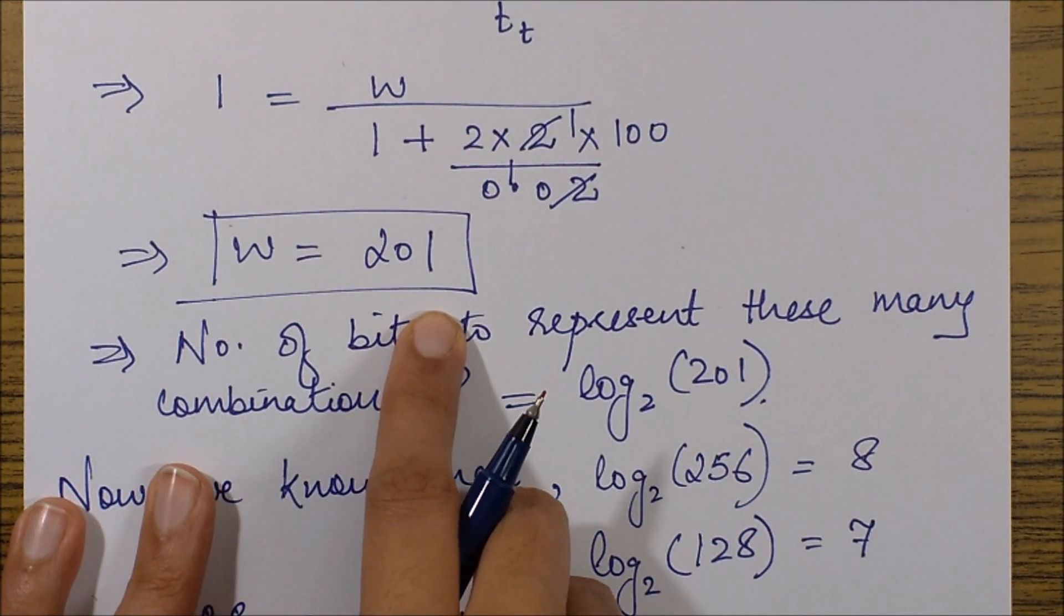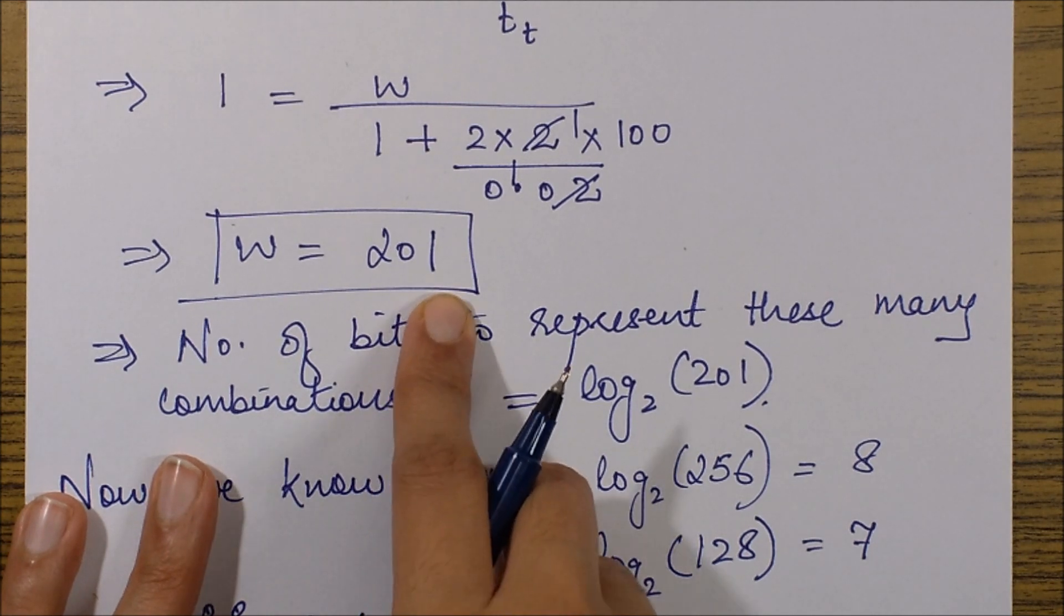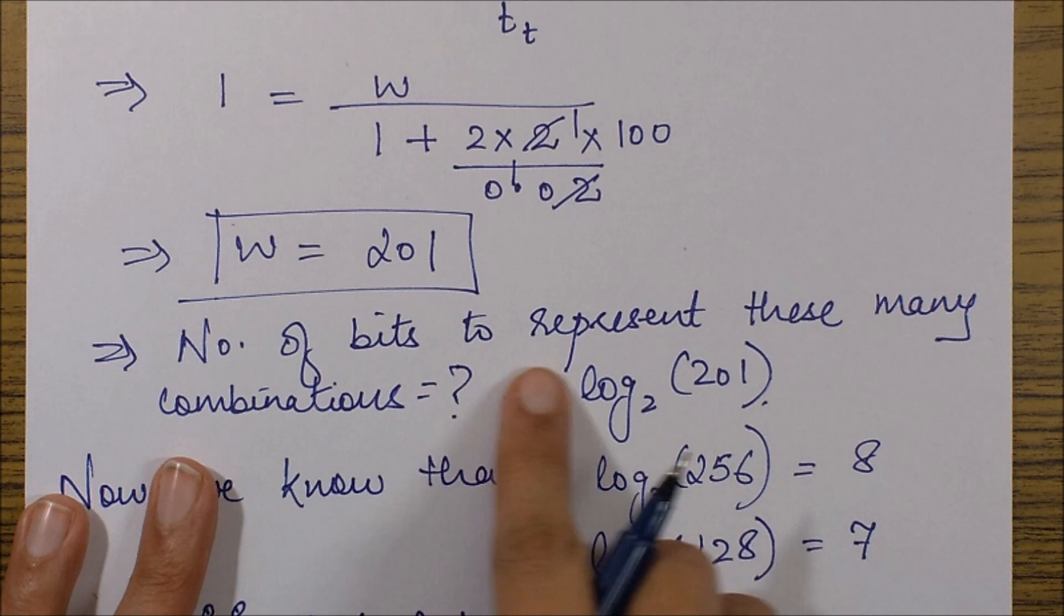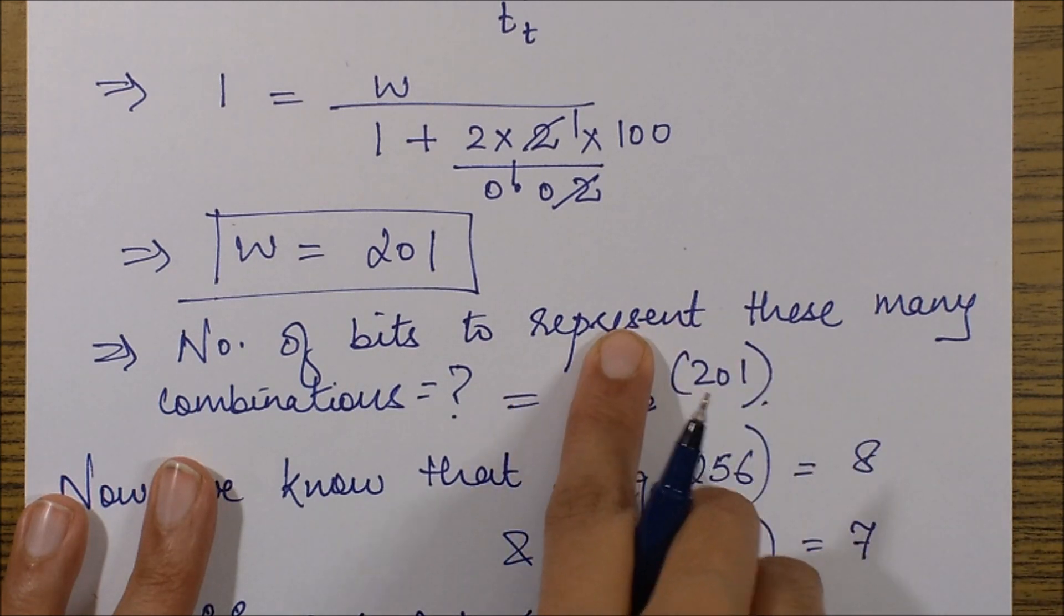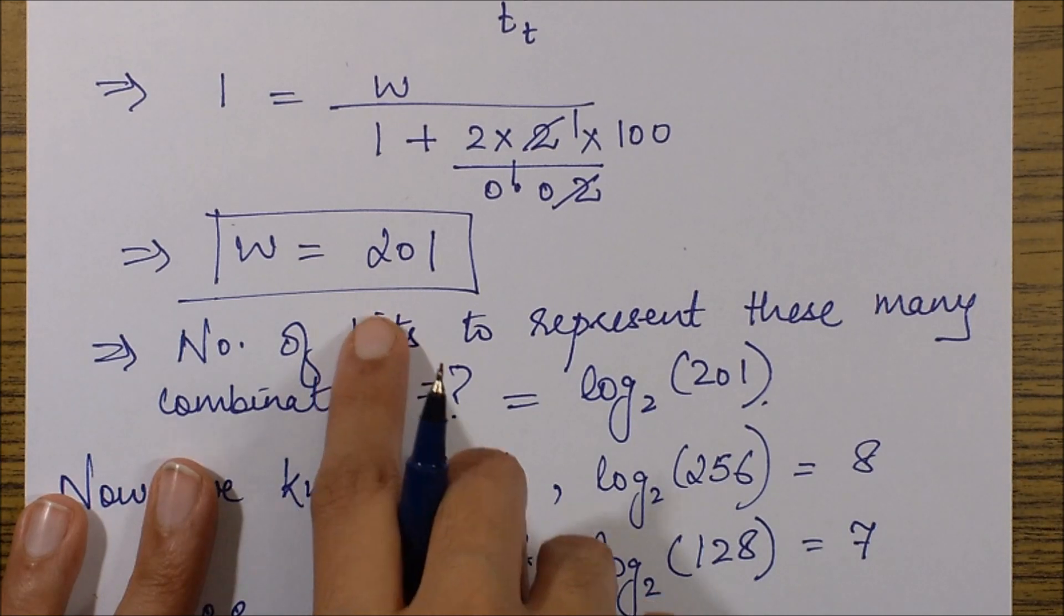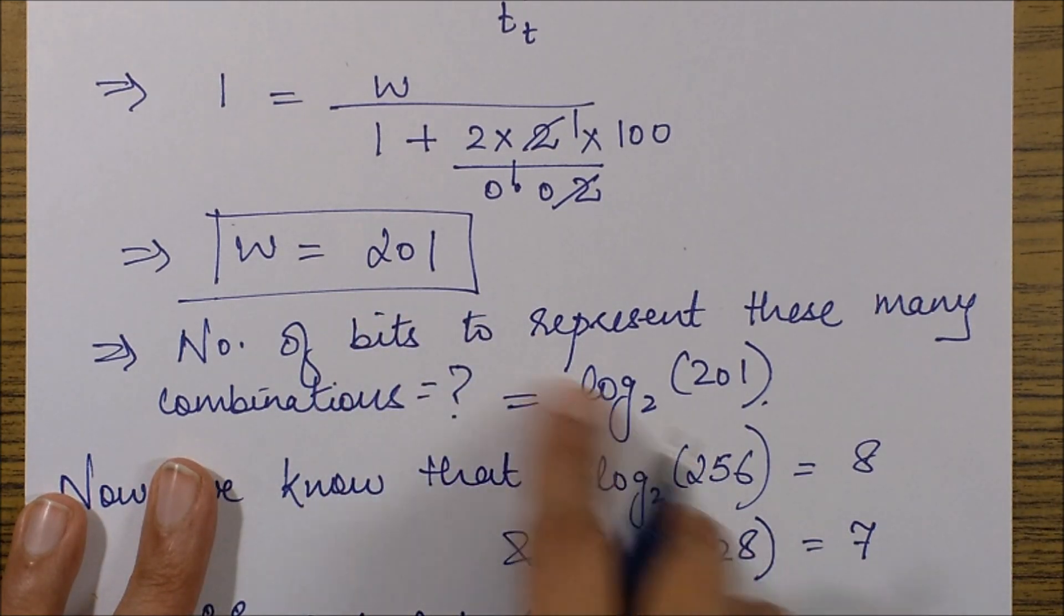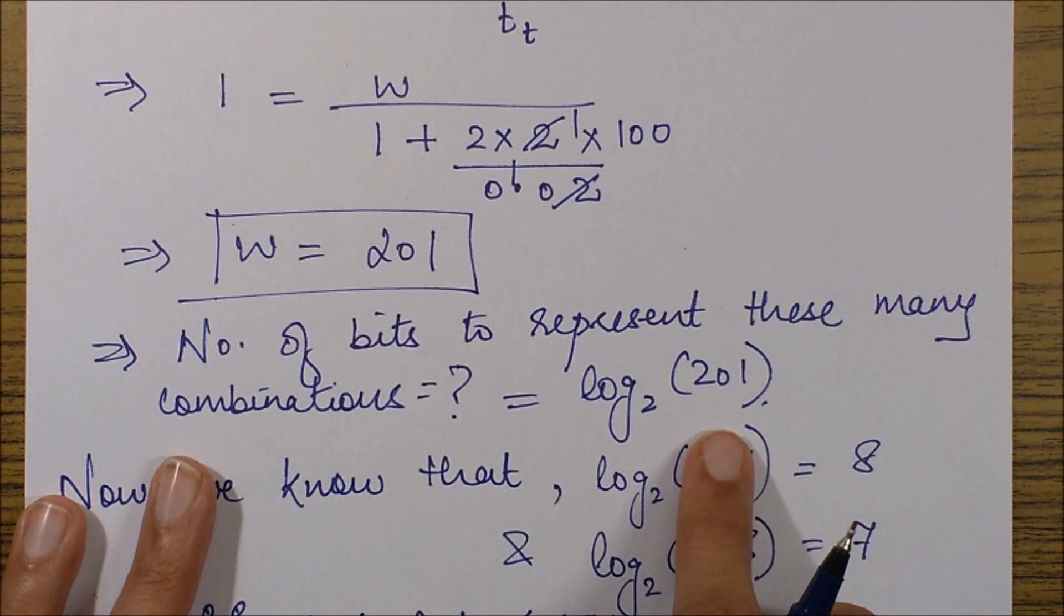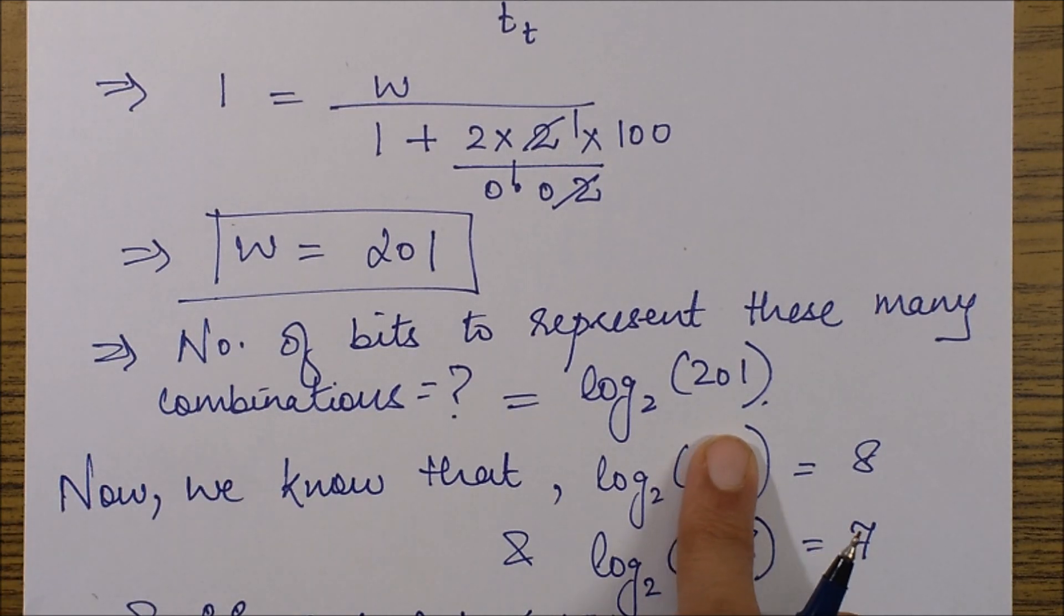Now my W is 201, but it did not ask me to give the value of W. What it asked was the number of bits to represent this W value. So the number of bits to represent these many combinations would be log base 2 of this value. Now, since we don't know the log base 2 of this, or it will be hard for some of you to find it, just recall the basic notion of log.